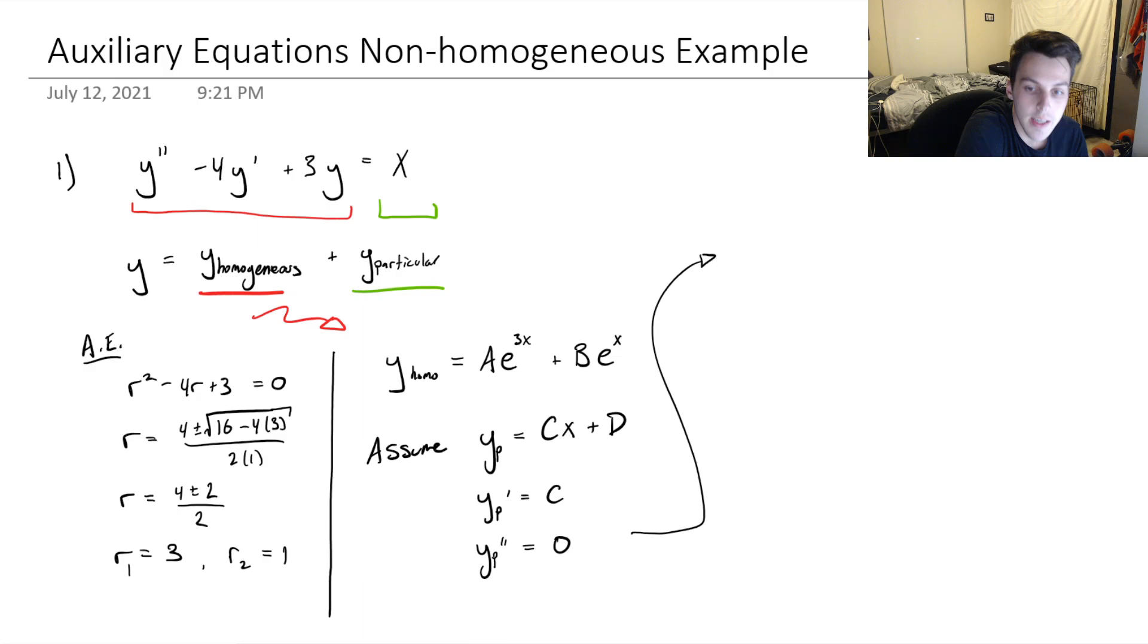So our ODE, let's verify. Essentially what we're doing, we're going to plug in all of these derivatives of what we assume the solution to be. And we're going to see what conditions we'll find for C and D to make this true, that for y particular to be a solution. So the ODE would then become,